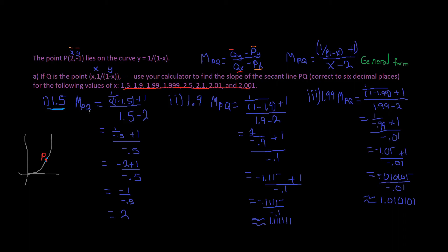So the slope m_PQ for x = 1.5: we compute 1/(1 - 1.5) + 1 divided by (1.5 - 2). That gives us 1/(-0.5) plus 1/(-0.5), which equals -2 + (-2) ... simplifying: -1 / -0.5, which equals 2. So the slope for x = 1.5 is 2.